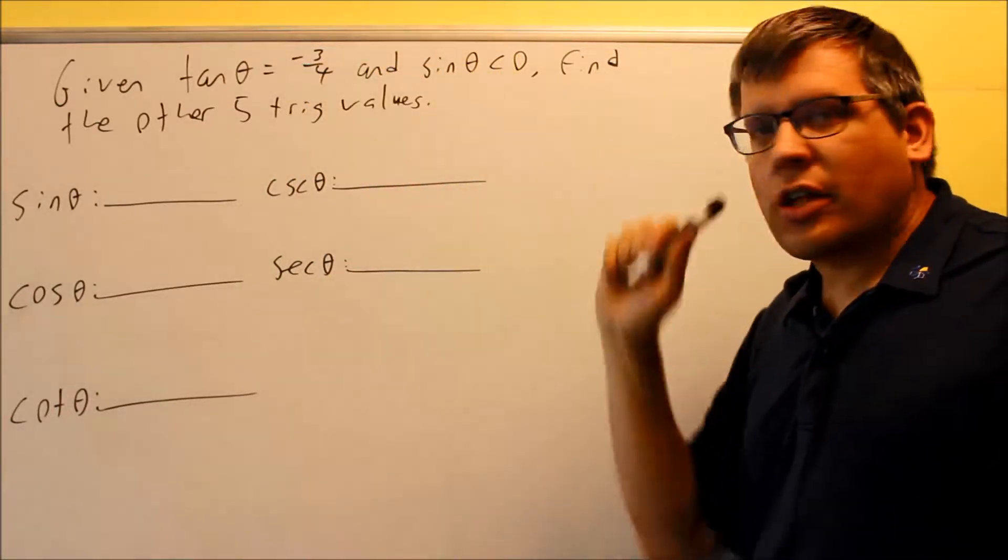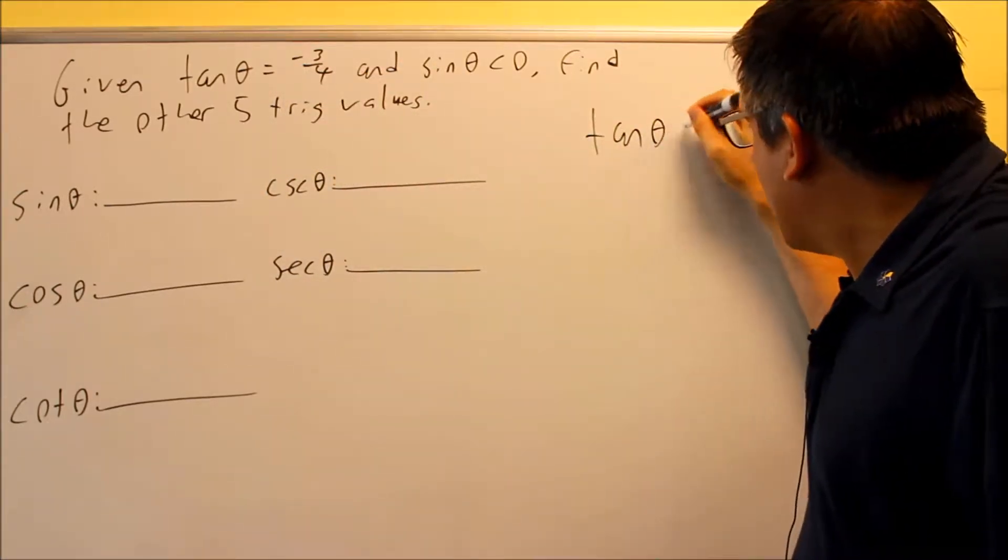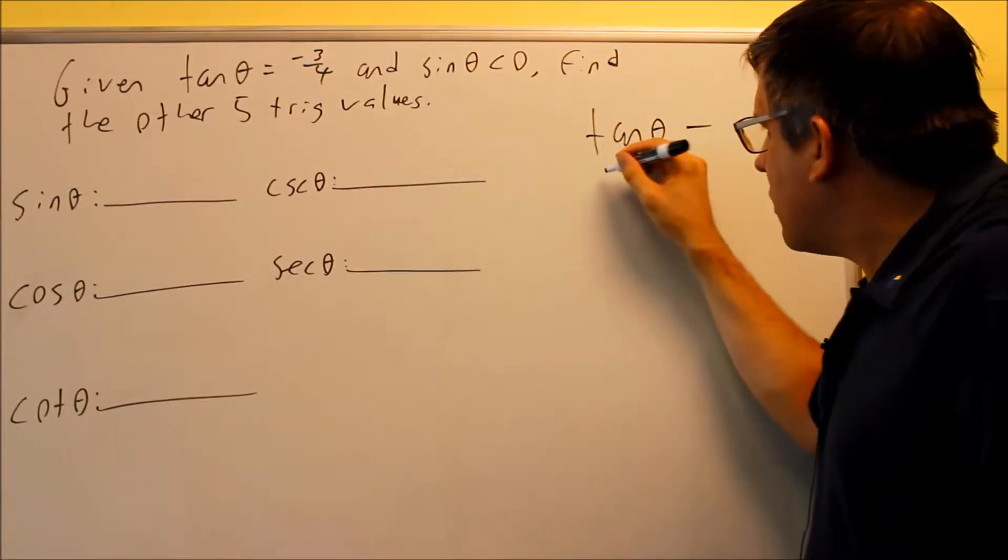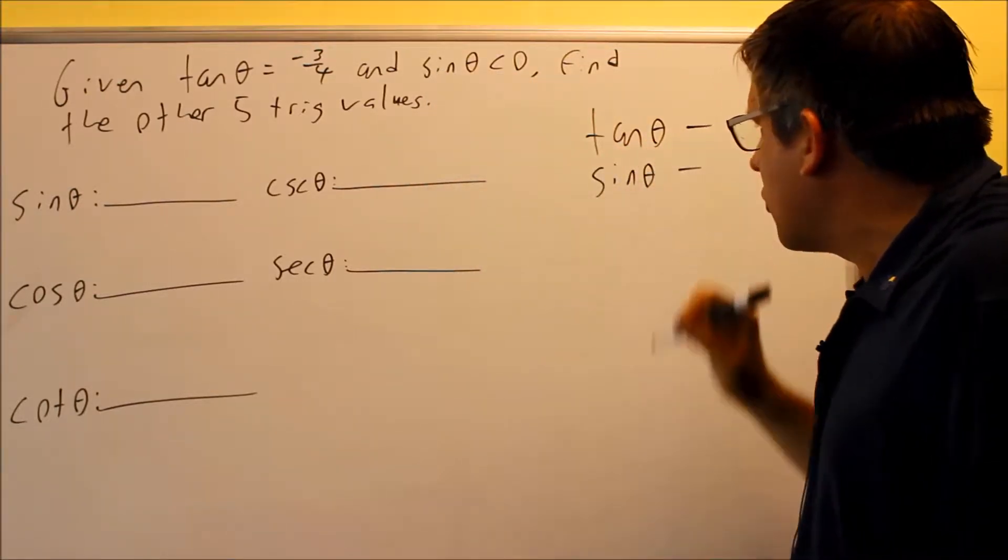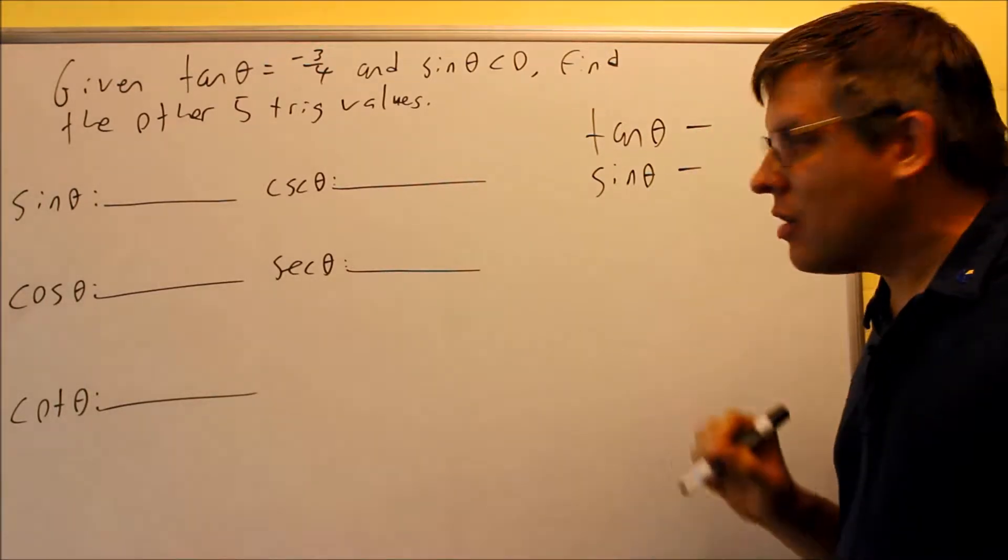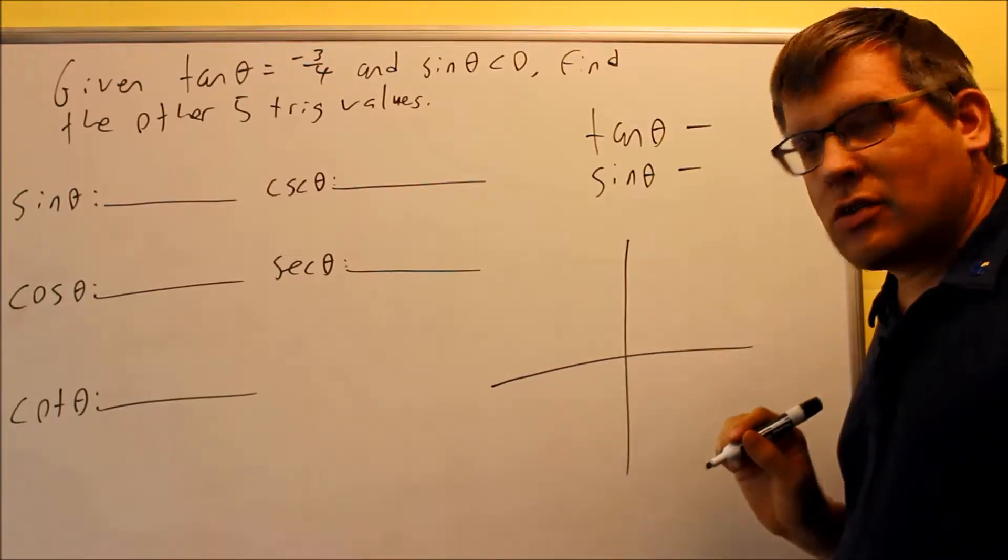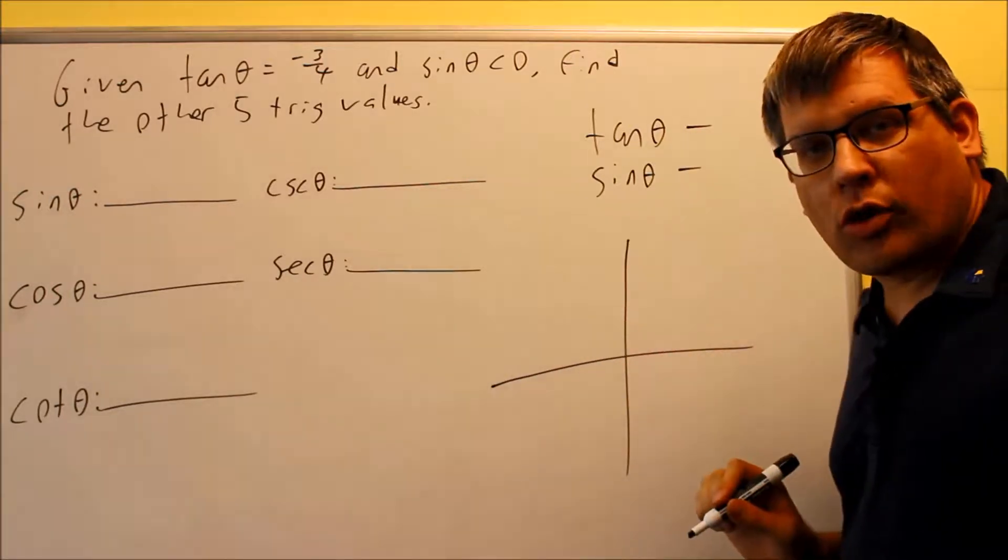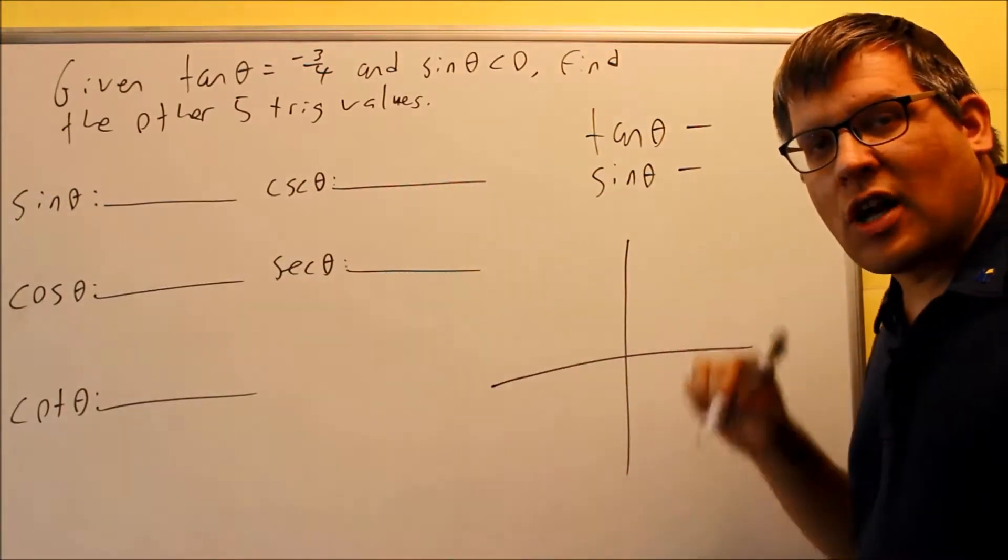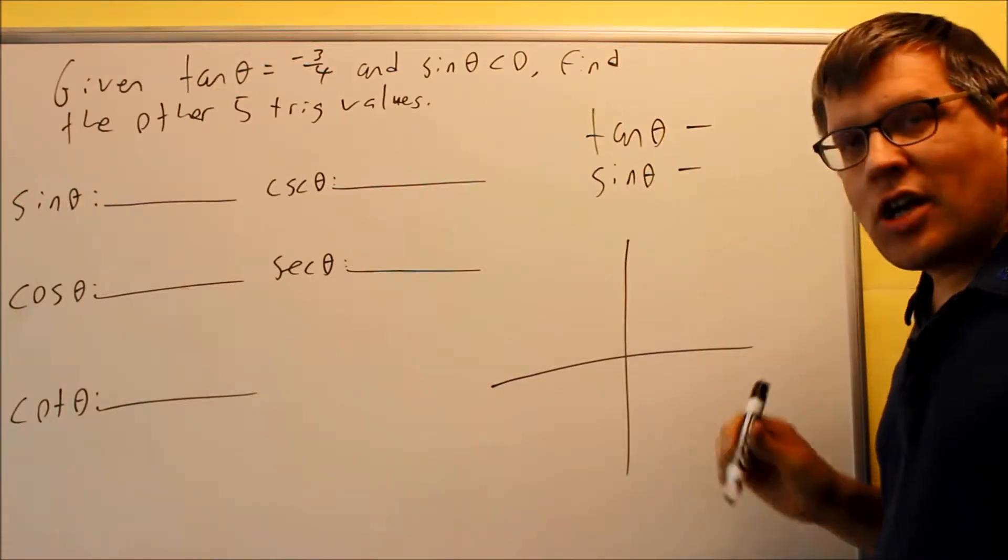Here's the information that was provided for us. Tangent theta has to be negative, and also sine theta has to be less than zero, which means that sine is also going to have to be negative. So I want to find the quadrant where tangent is negative and sine is negative. Once I find out which quadrant that is, then I'm going to go ahead and draw the triangle in one of those quadrants, and then I can get this eventually once I have all the sides of the triangle complete.